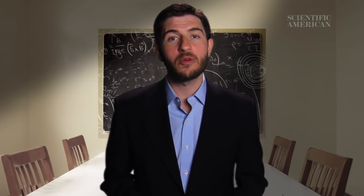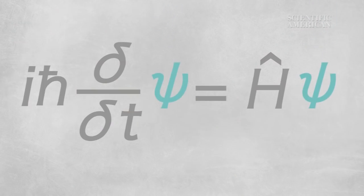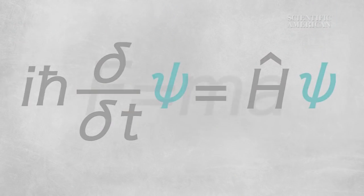To predict where the electron will be in the future, you just plug the wave function into Schrödinger's wave equation, the quantum equivalent of Newton's laws of motion.